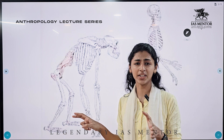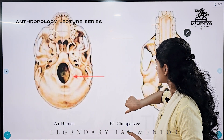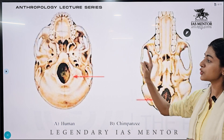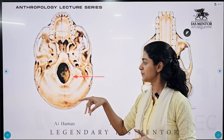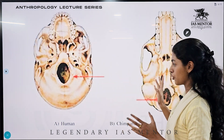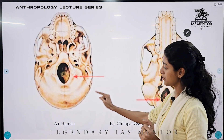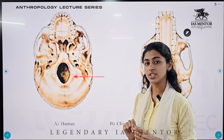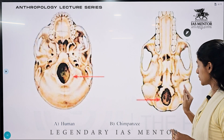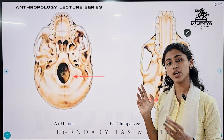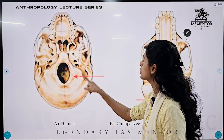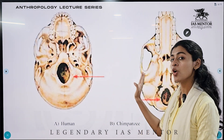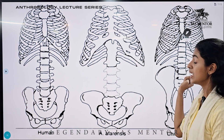For those wondering what the foramen magnum is — it is the hole through which the spine passes. For fossil remains, if the foramen magnum is in the anterior position, then the fossil is of a human. If the hole is in the posterior position, then the fossil is of a quadruped. So the change in position of the foramen magnum from posterior to anterior is evidence of the humanization process.